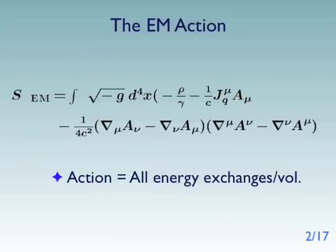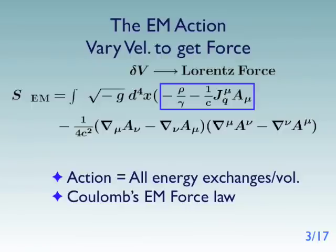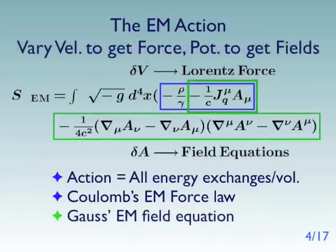Now what do you do with an action? Well one of the things you can do is you can vary the action with respect to the 4 velocity. When you do that you get the Lorentz force and in a non-relativistic situation you get Coulomb's EM force law. If instead you do a variation with respect to the 4 potential then you get the Maxwell field equations, specifically the force equations, one of which is Gauss's EM field equation.